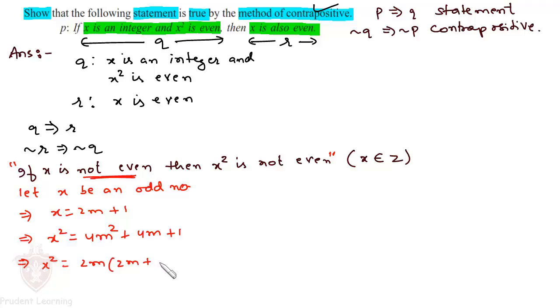Which gives us x² = 2(2m² + 2m) + 1. If you observe the right-hand side carefully, you will find that this is a form of an odd number. So we can say x² is an odd integer.